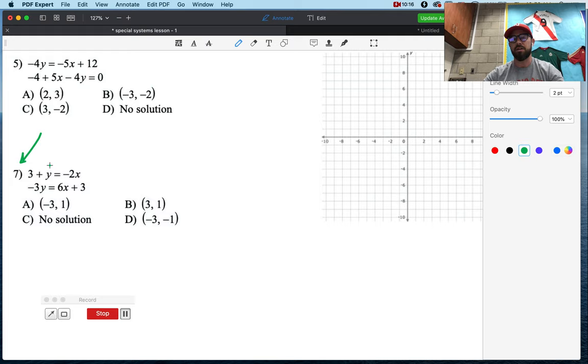So let's go ahead and attack number 7 as a class, take your time, press pause, attack 7. When you're done, press play, and we can kind of go over that one together.